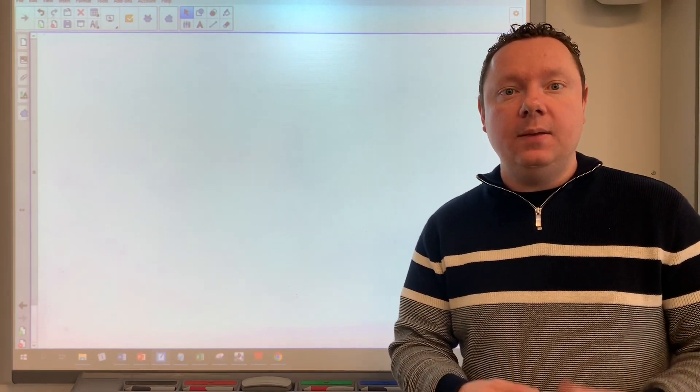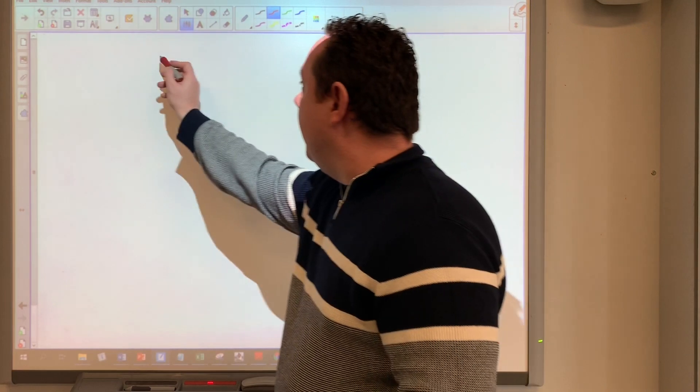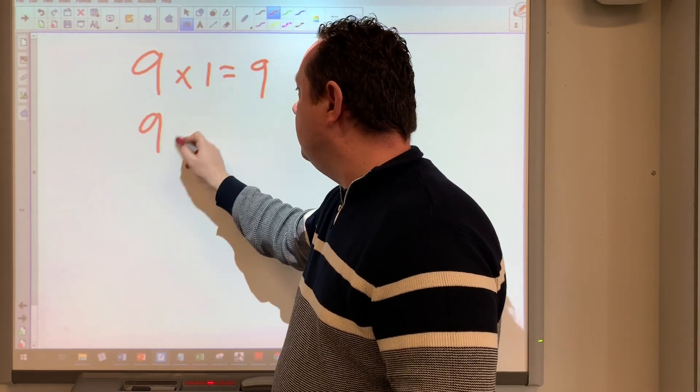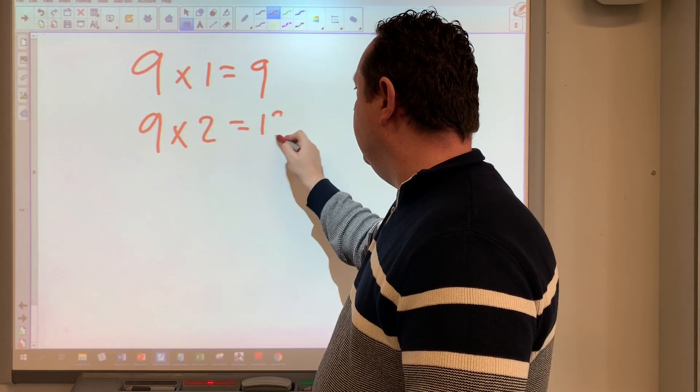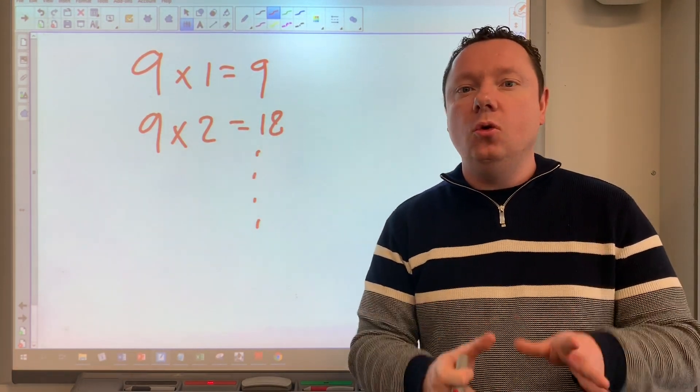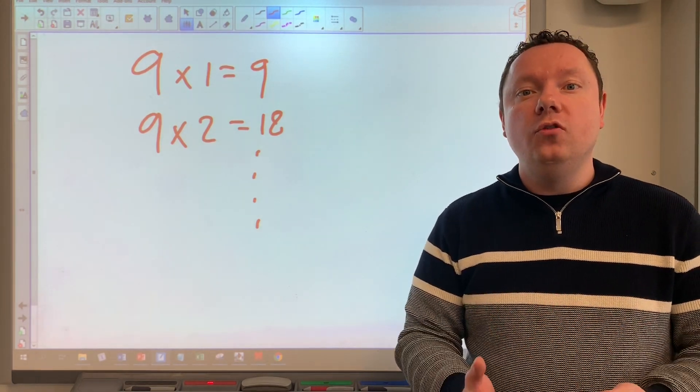Okay, the first thing we're going to look at is the nine times table. What is the nine times table? Well, literally it is just 9x1=9, 9x2=18, and so on. I'm not actually going to write down the whole nine times table because I don't expect you to memorize it. What I do expect you to do is learn this little trick that I'm going to teach you to do the nine times table.